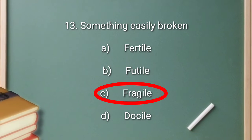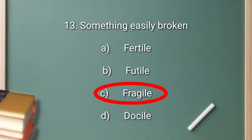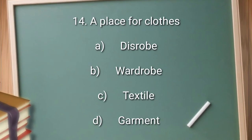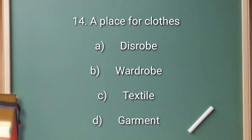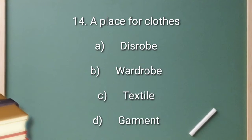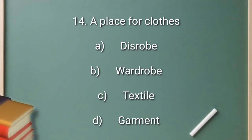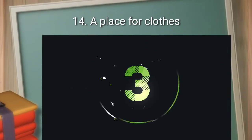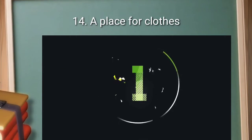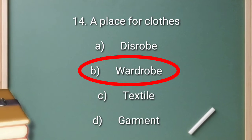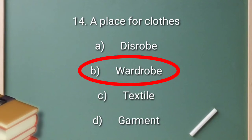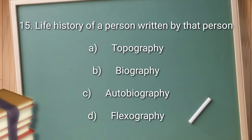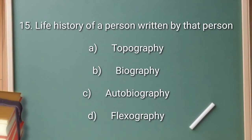The right answer is option C: fragile. Question number 14: a place for clothes. Option A: disrup. Option B: wardrobe. Option C: textile. Option D: garment. The right answer is option B: wardrobe.